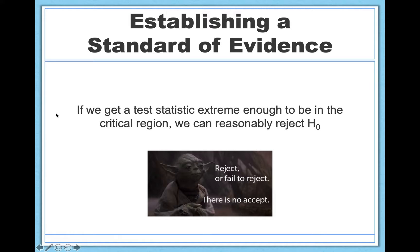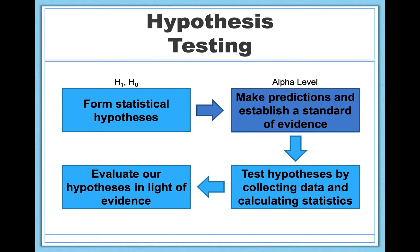So here's how all of this works — conceptually challenging, sort of abstract, but here's the punchline. If you get a test statistic — which we're going to talk about in the next video, something like a z-test or a t-test — these all yield test statistics. If you find a test statistic that's extreme enough to be in the critical region, you can reasonably reject the null hypothesis and say you have evidence for an effect. So that's establishing our standard of evidence, our alpha level. In our next video we're going to talk about actually doing the stats, collecting some data, and doing your test statistics.